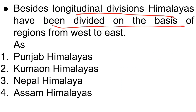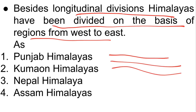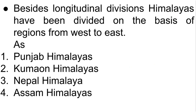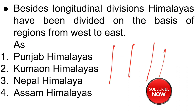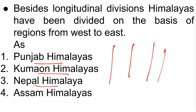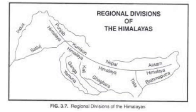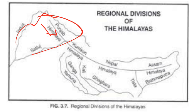Besides the three parallel ranges, the Himalayas have also been divided on the basis of regions from west to east into four longitudinal divisions: Punjab Himalayas, Kumaon Himalayas, Nepal Himalayas, and Assam Himalayas. The Punjab Himalayas extend between the Indus and Sutlej rivers and are also known as Kashmir Himalayas or Himachal Himalayas from west to east respectively.